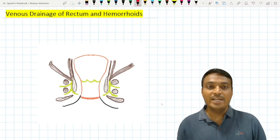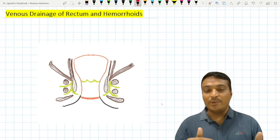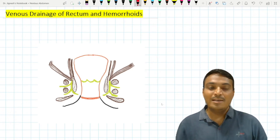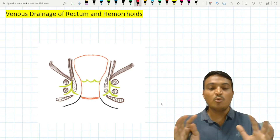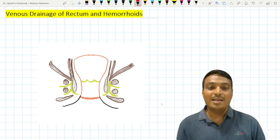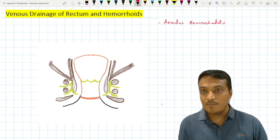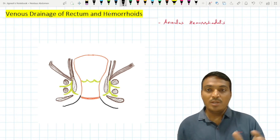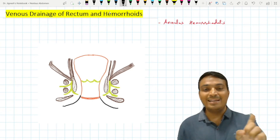Hello friends, let's see the venous drainage of the rectum and the related clinical anatomy. The rectum drains into the rectal veins, which are formed by a plexus around the lower part of the rectum and the upper part of the anal canal. This plexus is called the annulus hemorrhoidalis.